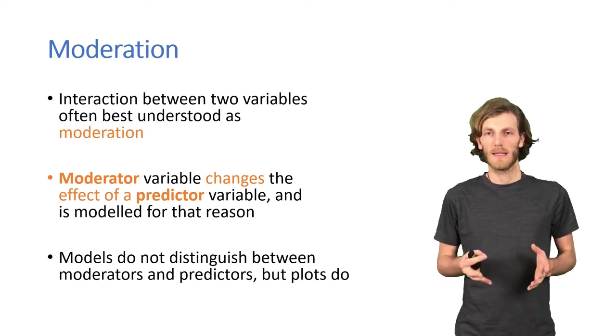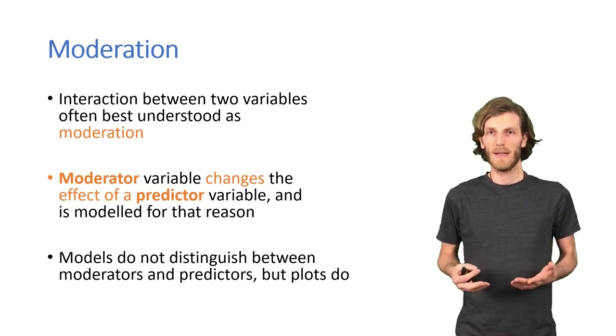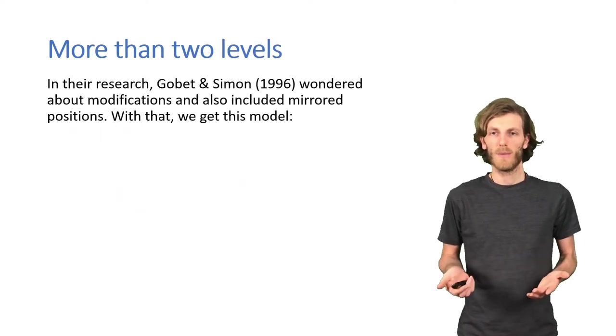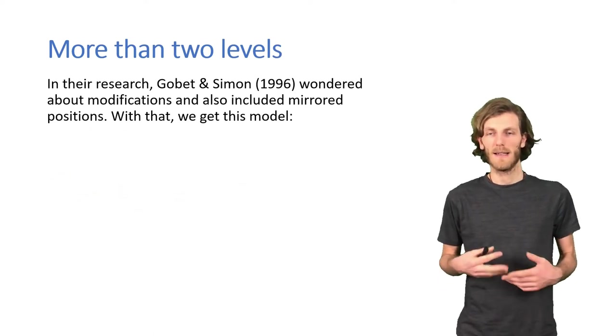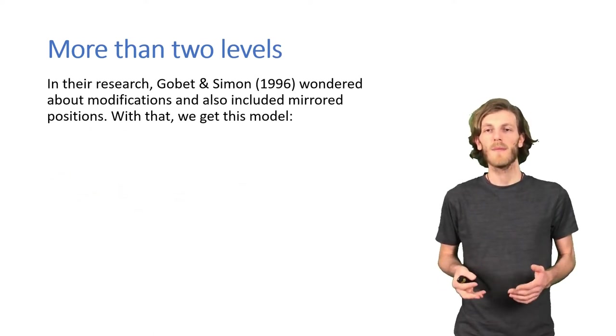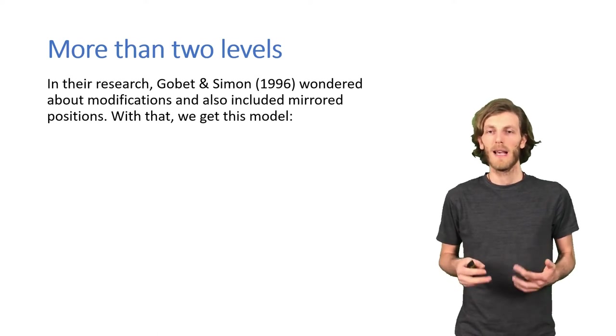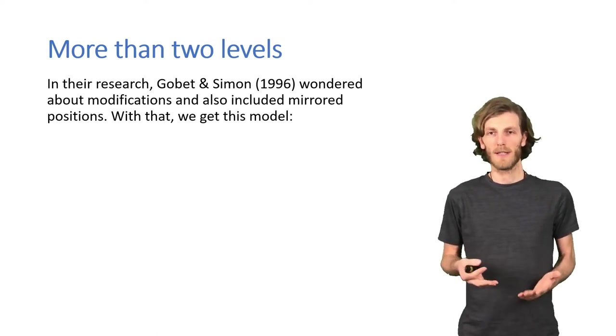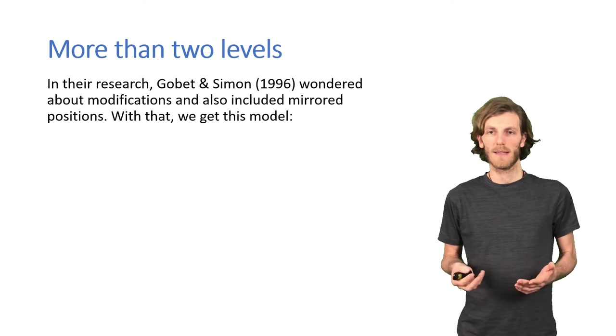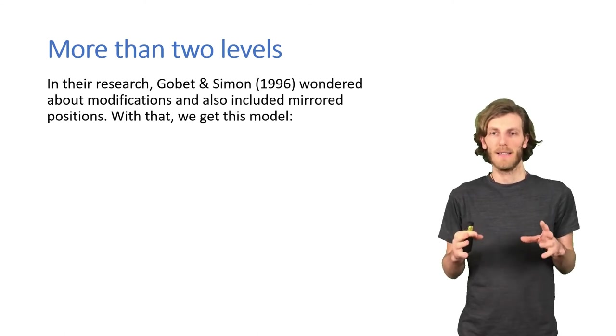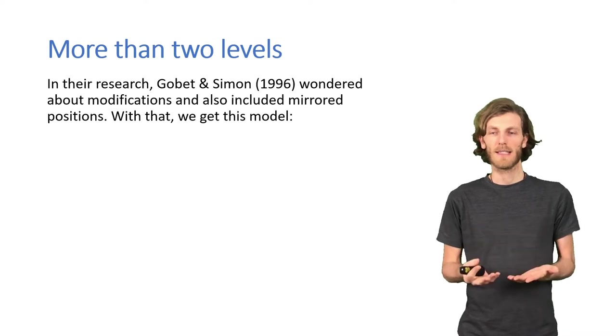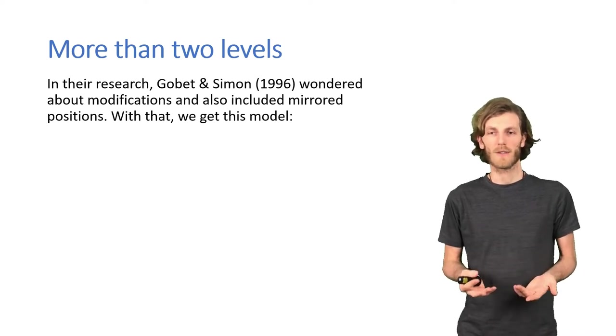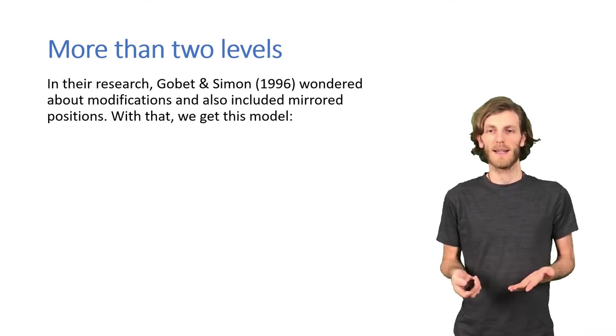So, this was the most straightforward case of interaction between two categorical variables with two levels. Because we might have more than two levels. In the study that I'm drawing this data from, they had quite a few more levels. One interesting one was that they also had mirrored positions. So, they said, well, if chess players actually remember full chess boards, then even giving them just a mirror image should already disrupt their mental processes. So, they added that as an extra condition.